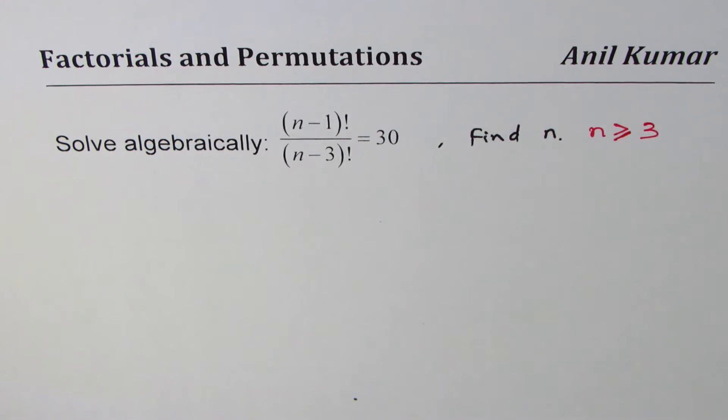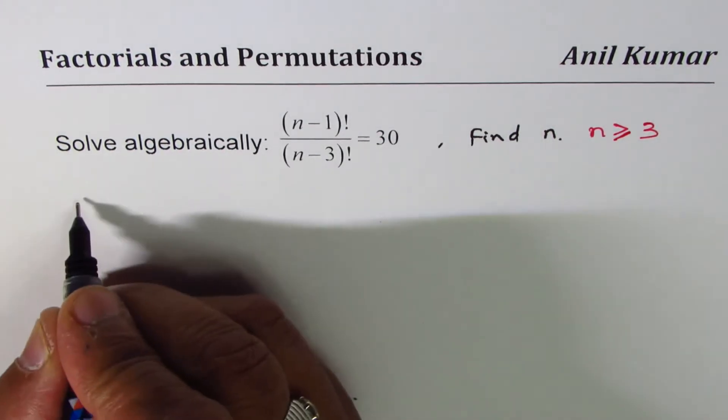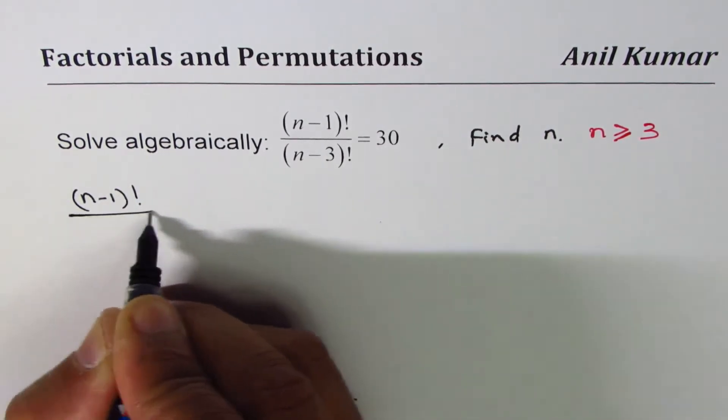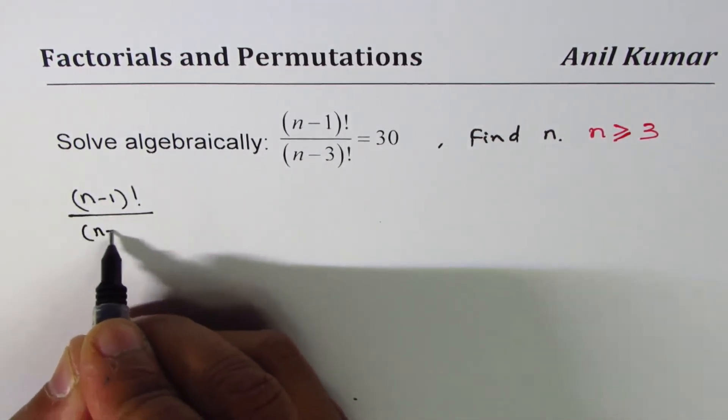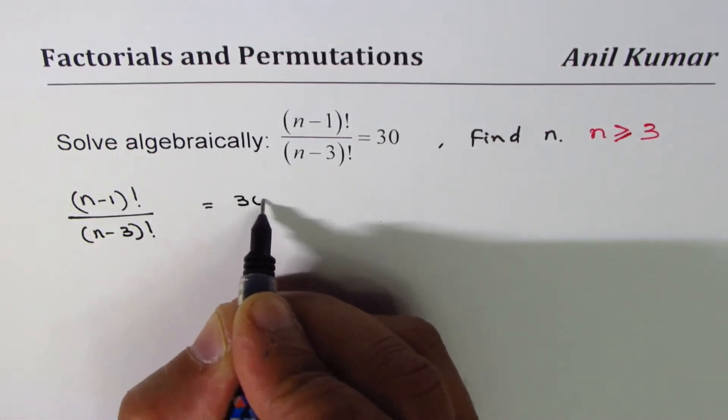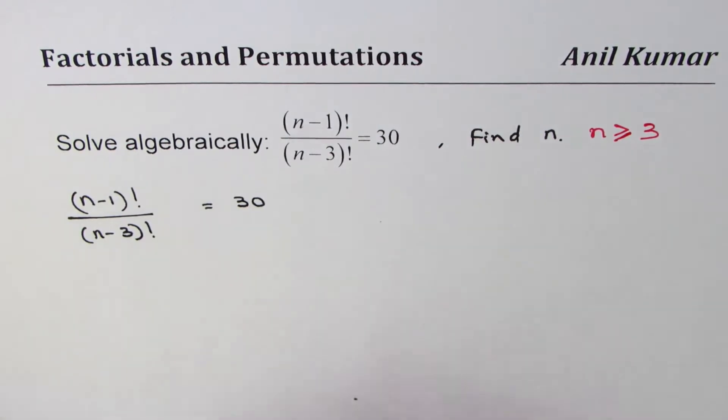Okay, now let's try to solve it. So what we are given here is (n-1)! divided by (n-3)! equals 30. (n-1)! can be written as (n-1) times (n-2) times (n-3) and so on.